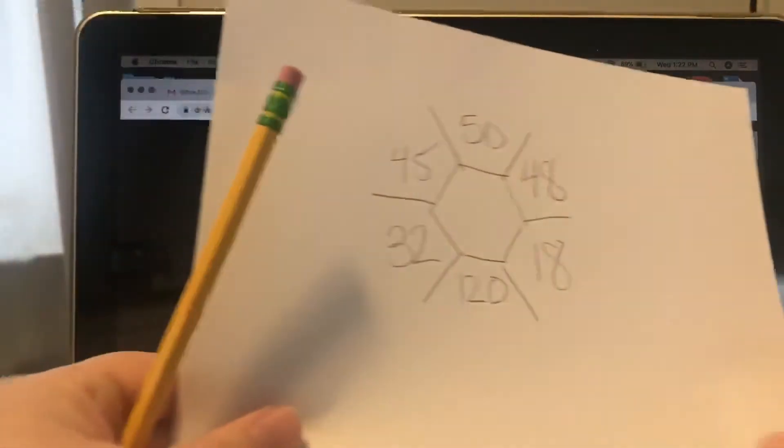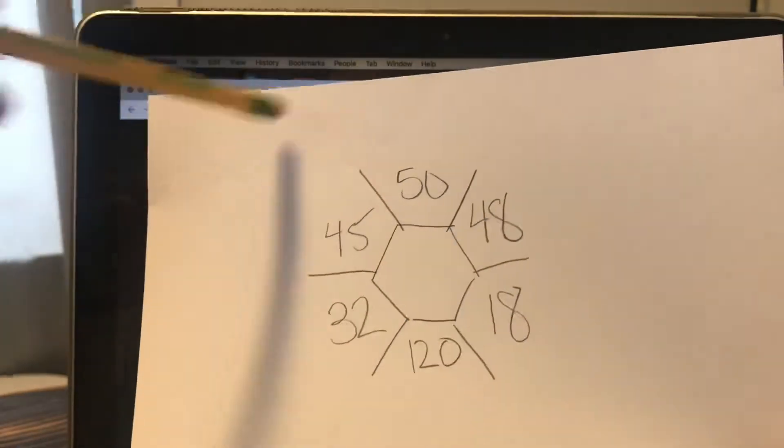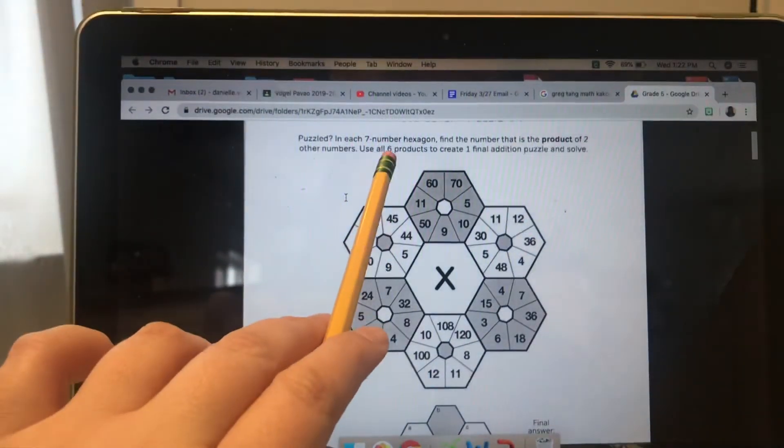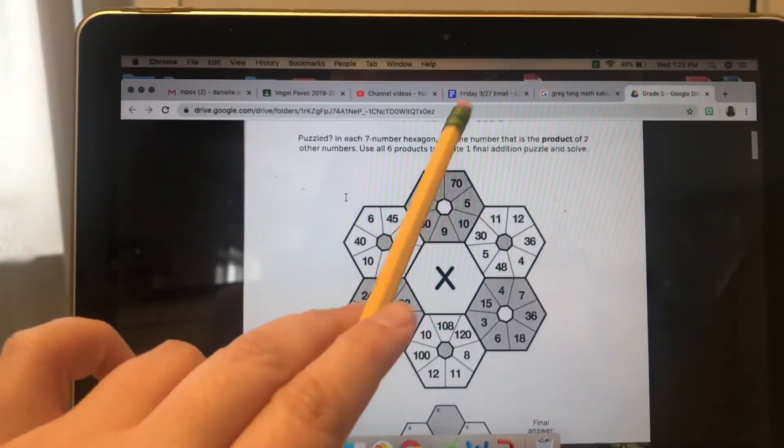So I found all the products for the square, not square, the hexagon. So then it says I'm gonna use all of these products to create a final addition puzzle.